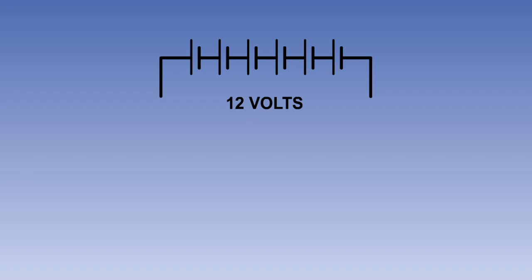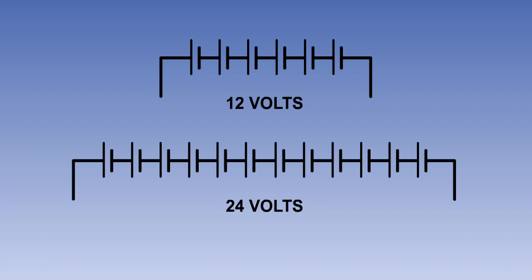A 12 volt lead acid battery consists of 6 cells connected in series, and a 24 volt battery of 12.